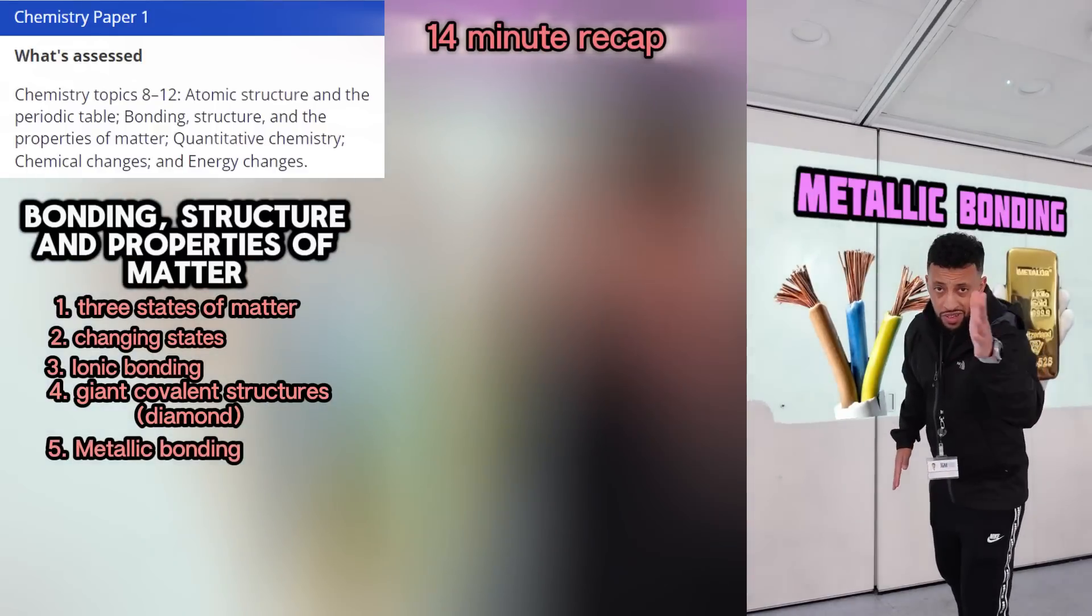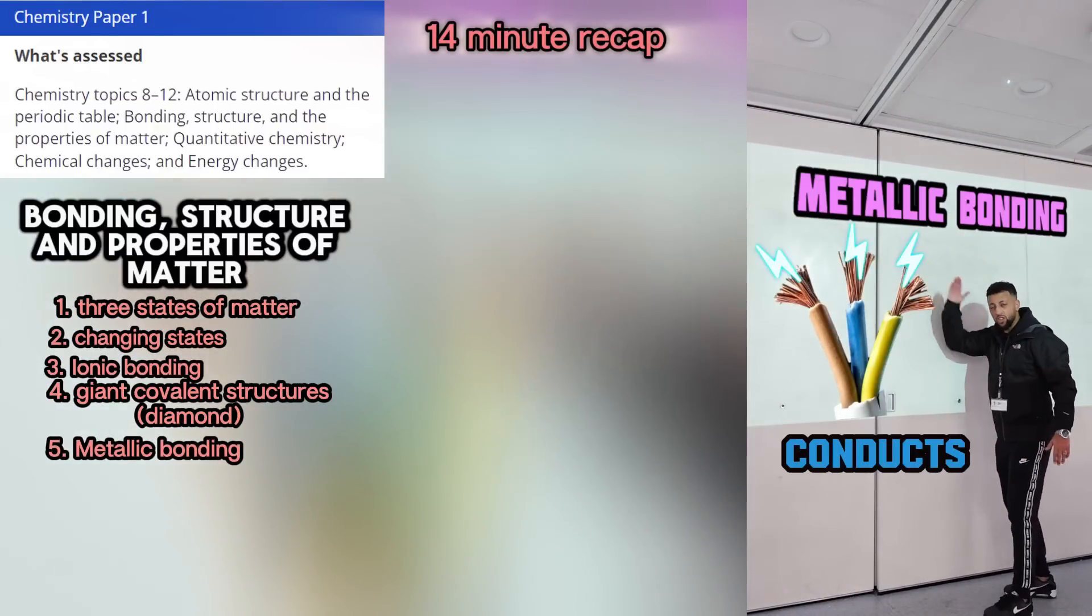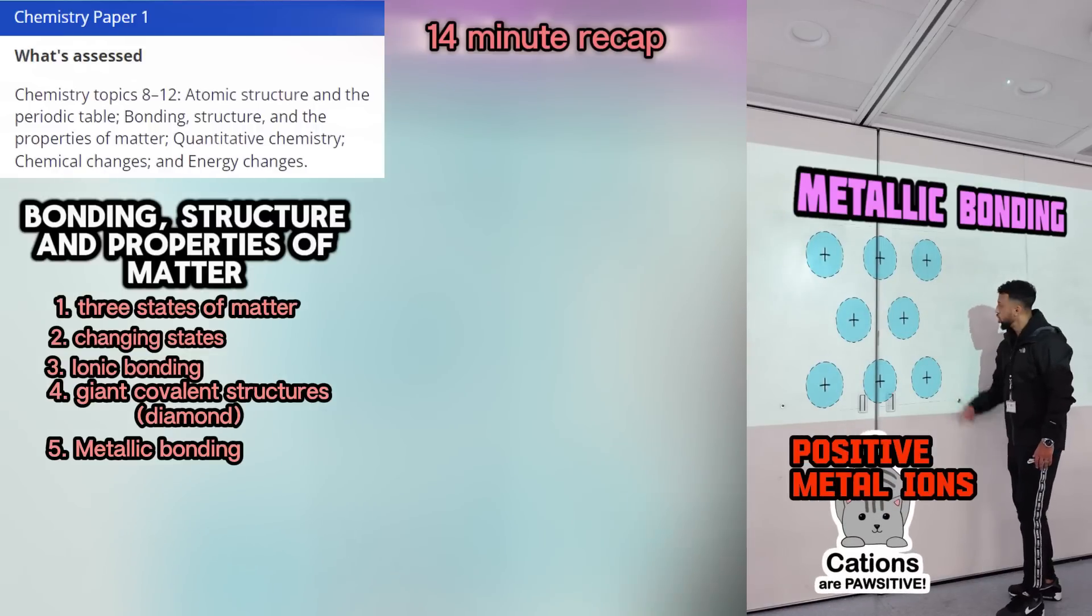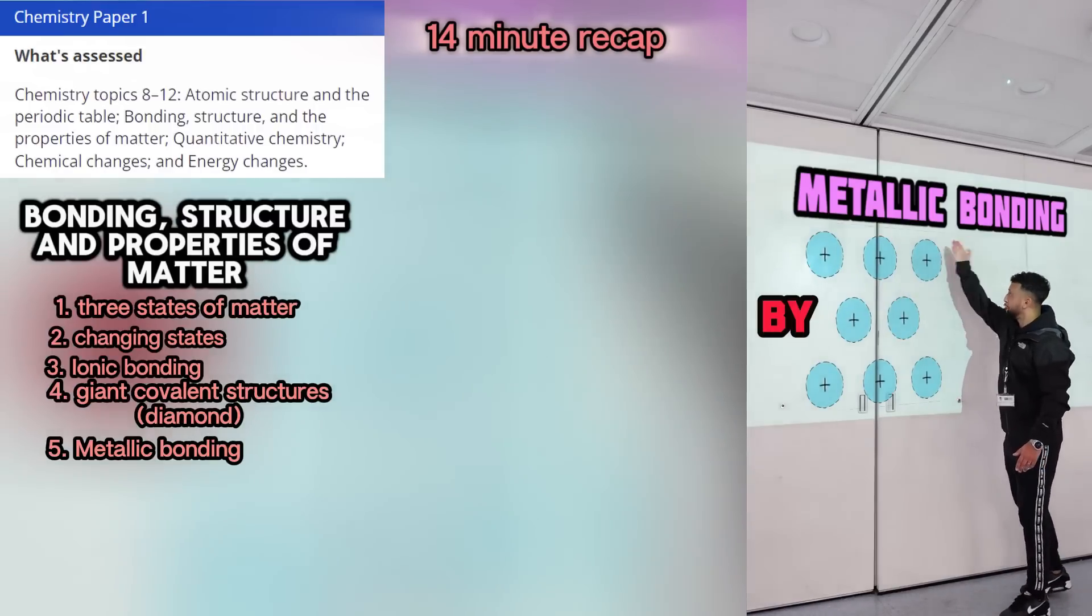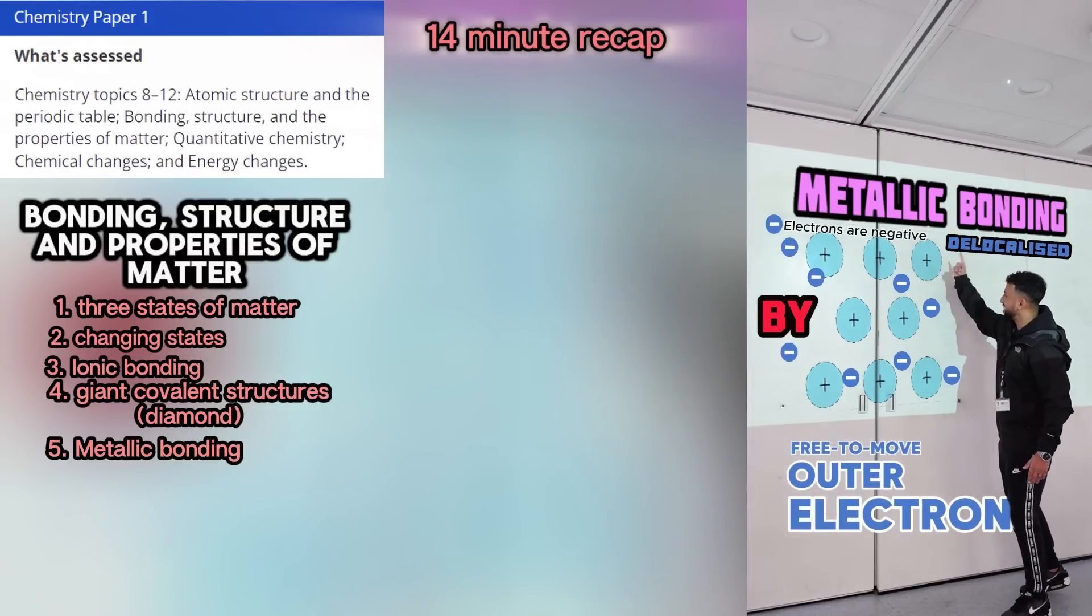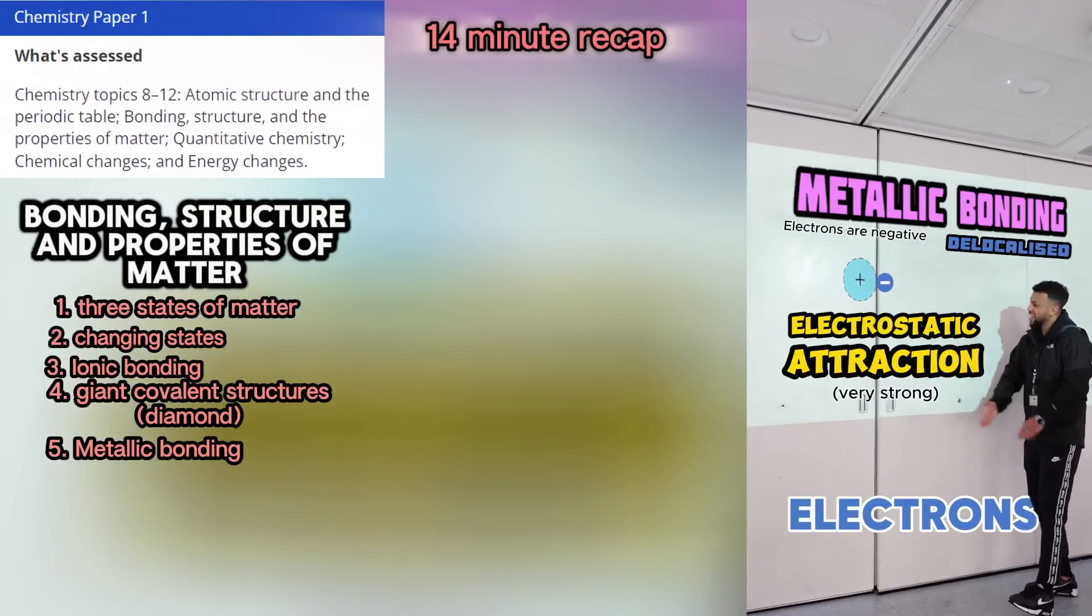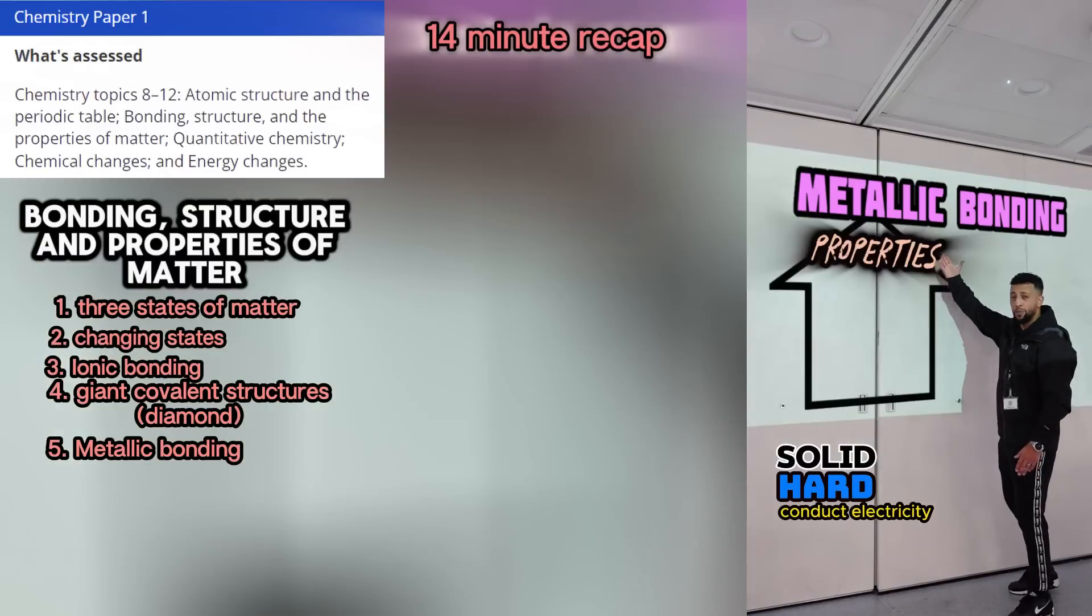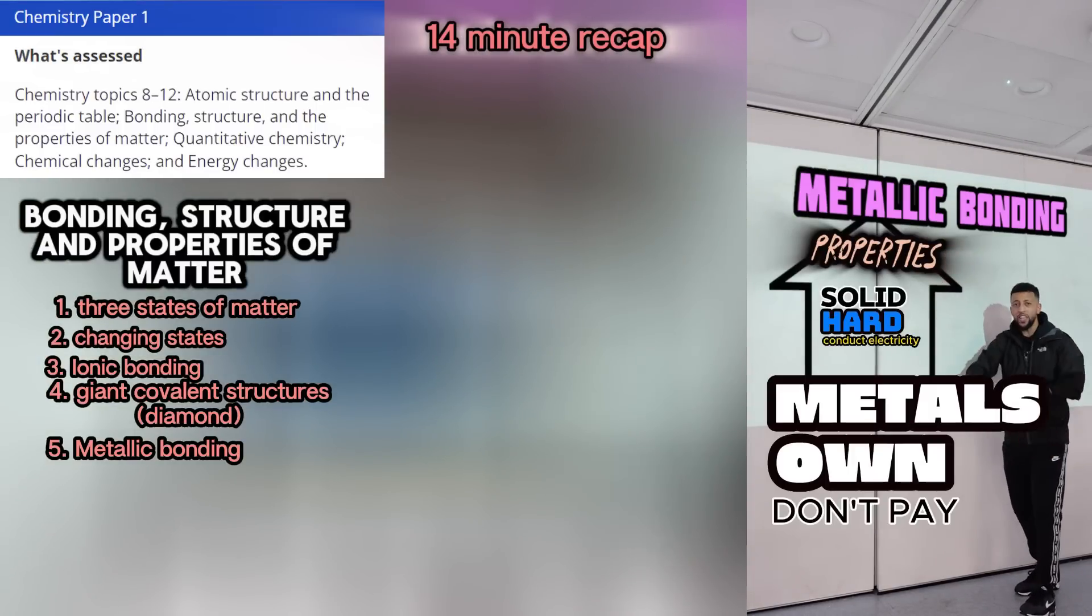Chemistry class metallic bonding. Here's why a metal conducts. Let's take a look at the structure: positive metal ions surrounded below and above by free to move electrons. Delocalized is what we call them. Electrons are negative, there's electrostatic attraction. This is why they're solid and hard, and we can see why they carry a charge. Now all their properties make sense.